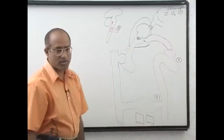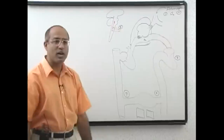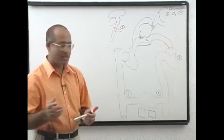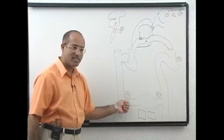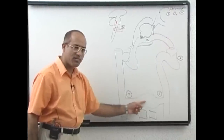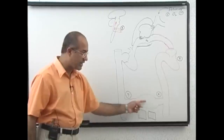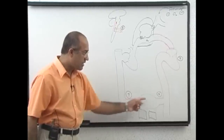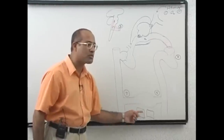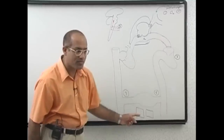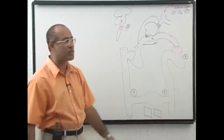Number six is sufficient arterial supply to the tissue level, and number seven is proper venous drainage. If veins are blocked, blood stagnates in the microcirculation — pressure rises, no new blood can enter, the stagnant blood's oxygen is consumed, and tissue experiences hypoxia.